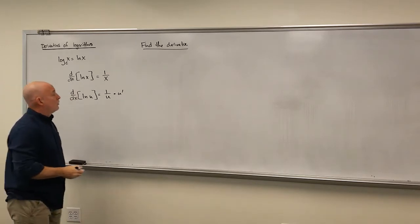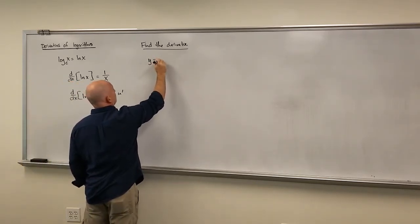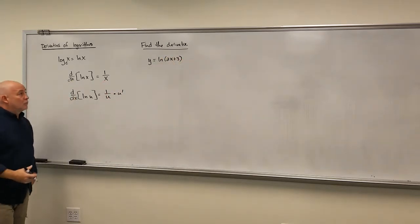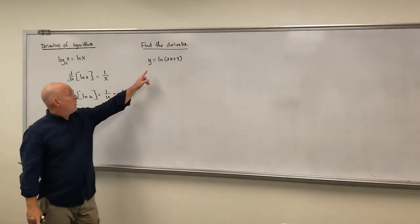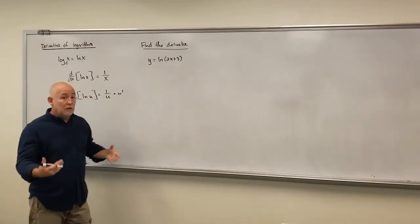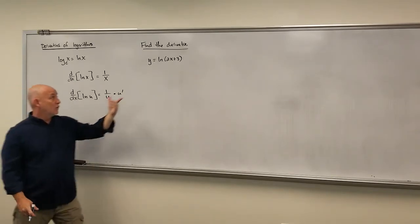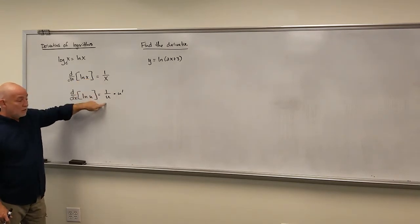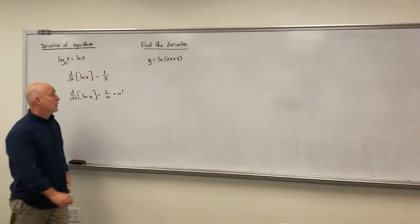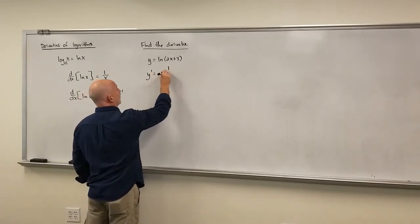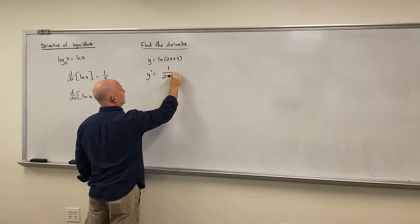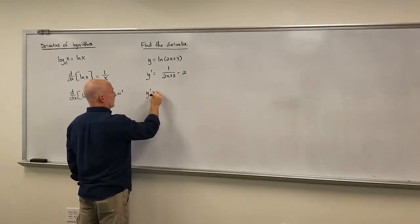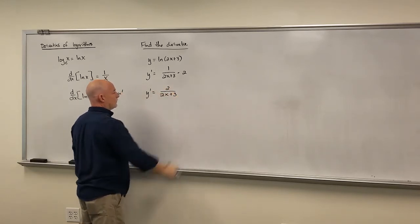Let's start out with a really basic one. Let's say y is equal to the natural log of 2x plus 3. Remember, the thing you're taking the log of is called the argument. The easiest way to remember this rule is 1 over the argument times the derivative of the argument. So the derivative is 1 over the argument times the derivative of that — the derivative of 2x plus 3 is just 2 — so it's 2 over 2x plus 3.